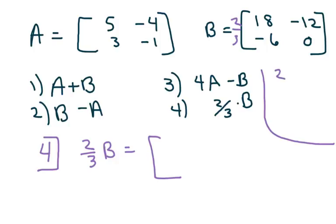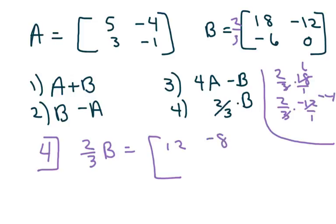So two thirds times B: you multiply each piece. Two thirds times 18 is 12. Two thirds times negative 12 is negative 8. Two thirds times negative 6 is negative 4, and two thirds times 0 is 0.